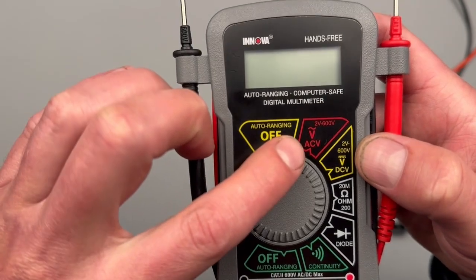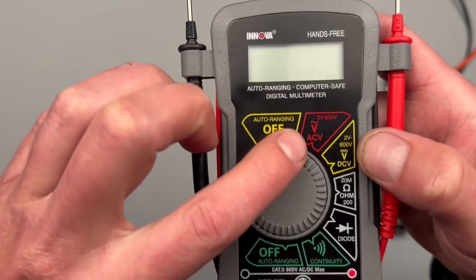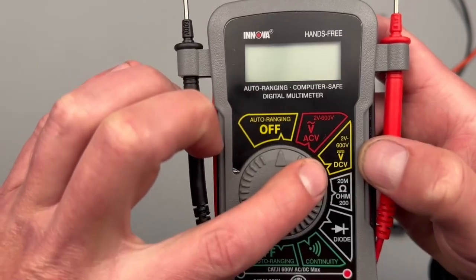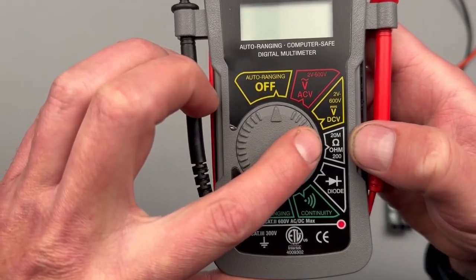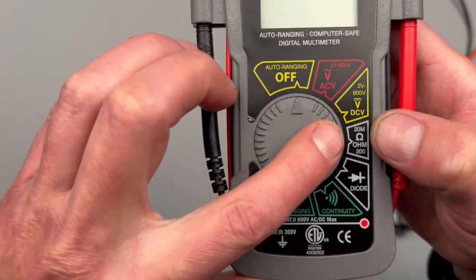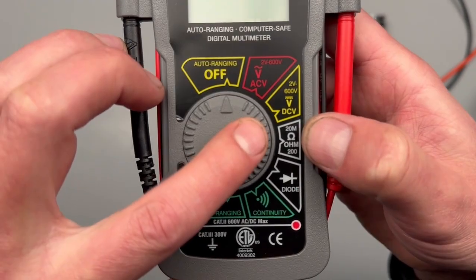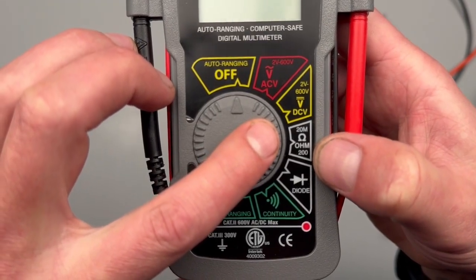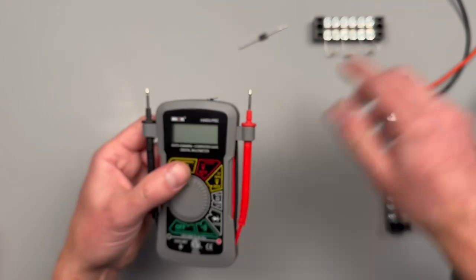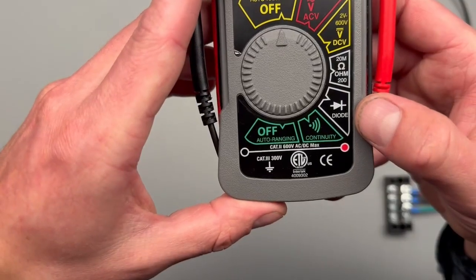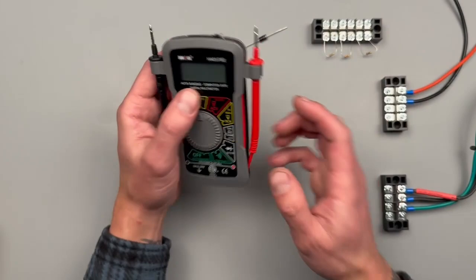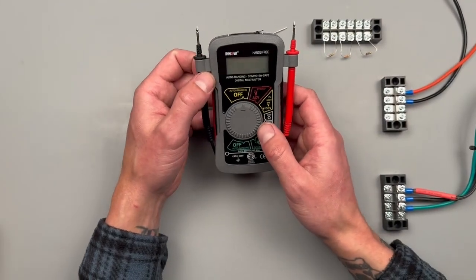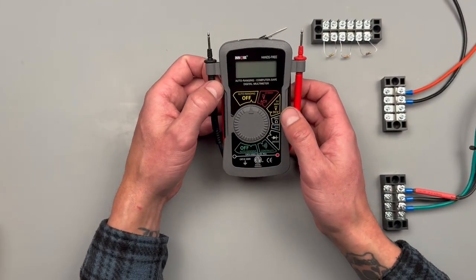We're going to be going through the wheel clockwise. It states that it's auto-ranging and has two separate off positions. We can check voltage AC 2 to 600 volts, voltage DC 2 to 600 volts, we can check ohms, and that's going to be 20 mega ohms down to 200 ohms. We can check diodes and continuity.